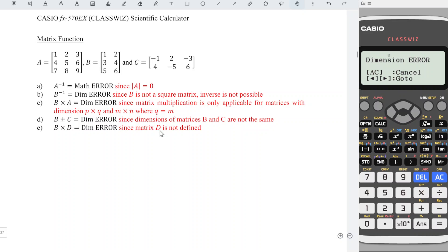To check whether D is defined, we can press option, edit matrix D. As we can see, the calculator shows this, which means that matrix D is not defined before.